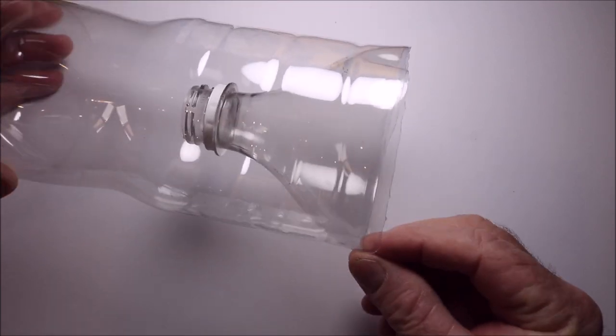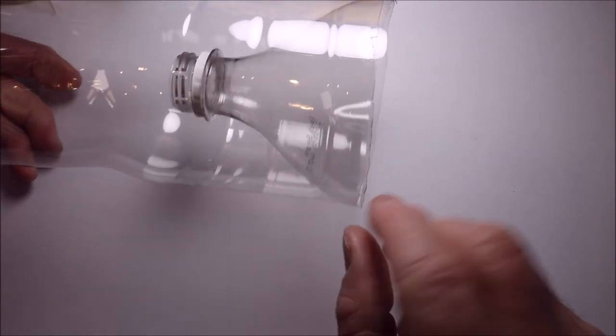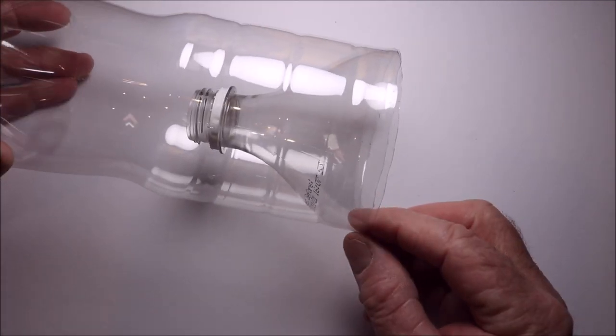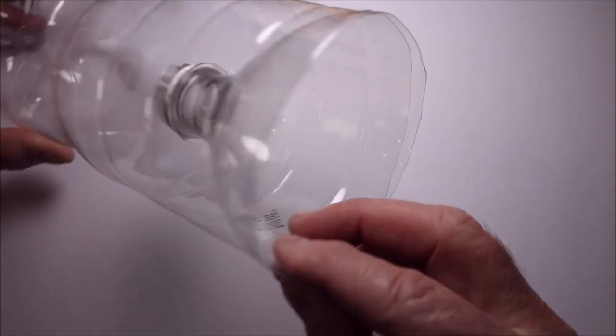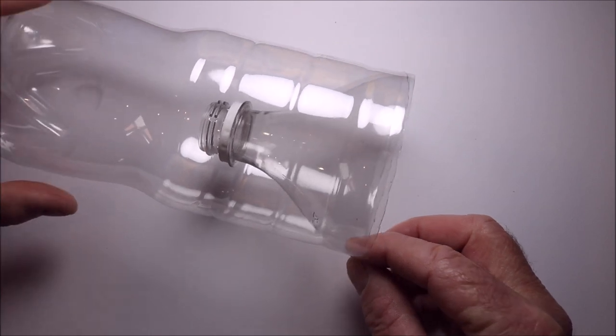Alright. So the next step we need to do is place some small holes around the trap. Two or three. Just to hold the neck of the bottle in place. So the way we do that is pretty simple.